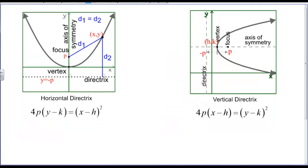As far as equations for parabolas go, if I have a horizontal directrix, my equation is as follows: (x - h)² = 4P(y - k).